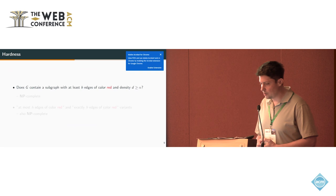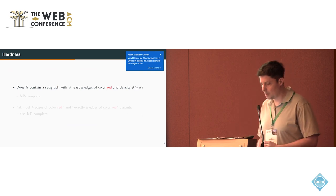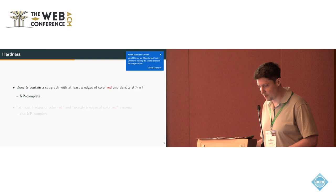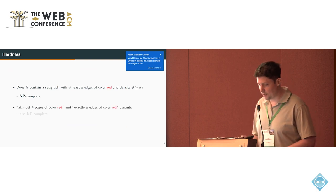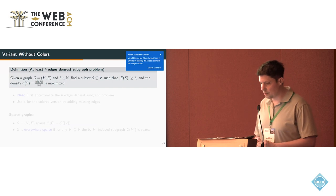Next we took a look at the hardness. Even if you only have one color, the corresponding decision problem is NP-complete, and the same holds for the at-most-edges variant and the exactly-h-edges variant. So because these problems are hard, we introduce an approximation algorithm.